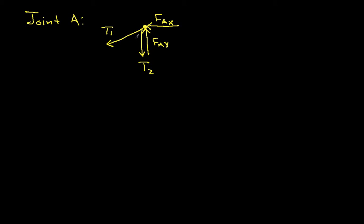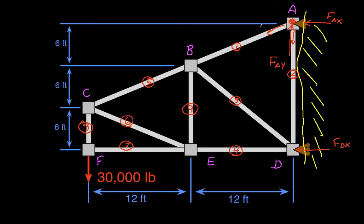Now one thing we didn't look at yet, which we need to in order to compute the tension in member 1, is this angle here. We have an angle where we go over 12 feet and have a distance here of 6 feet. So this angle is going to be the inverse tangent of 6 feet over 12 feet, which when you compute this is 26.6 degrees.